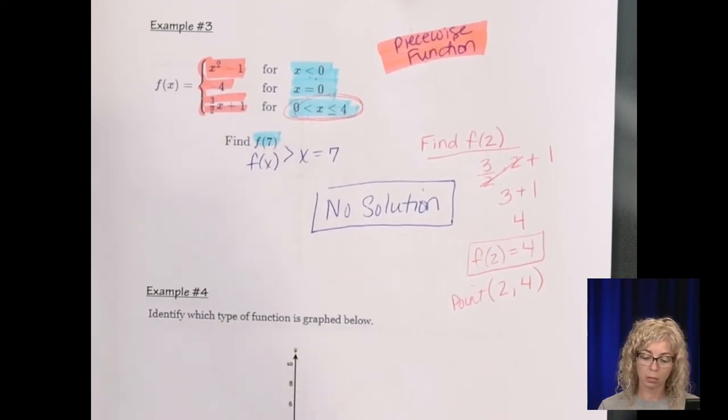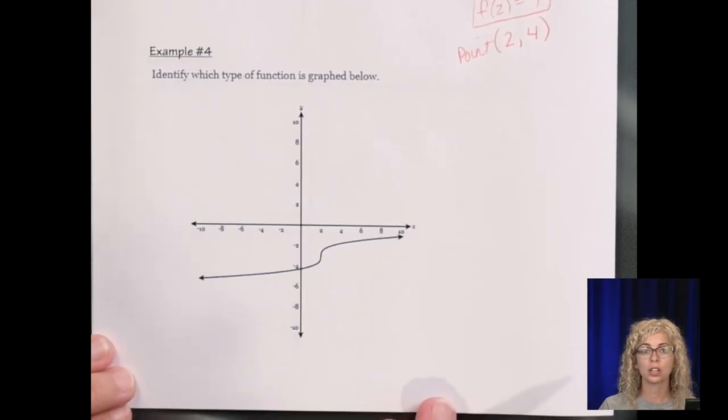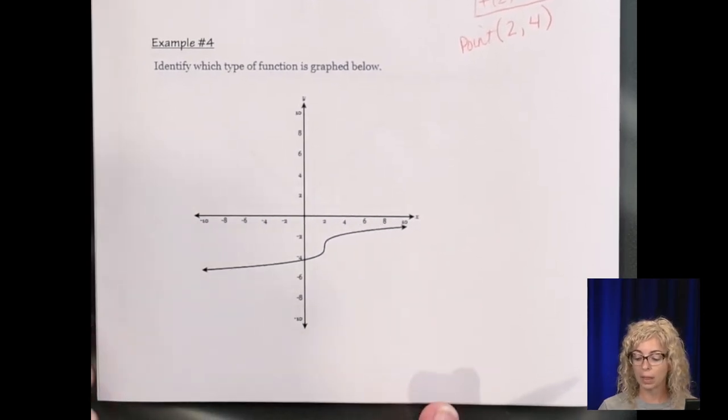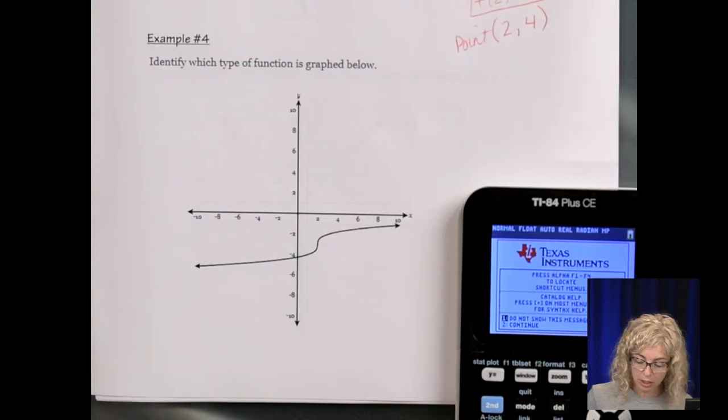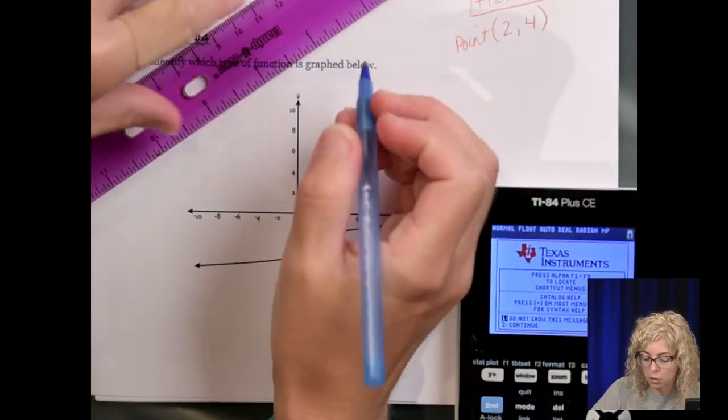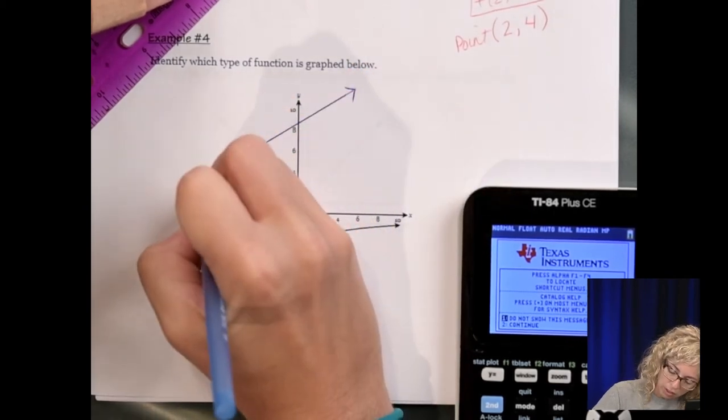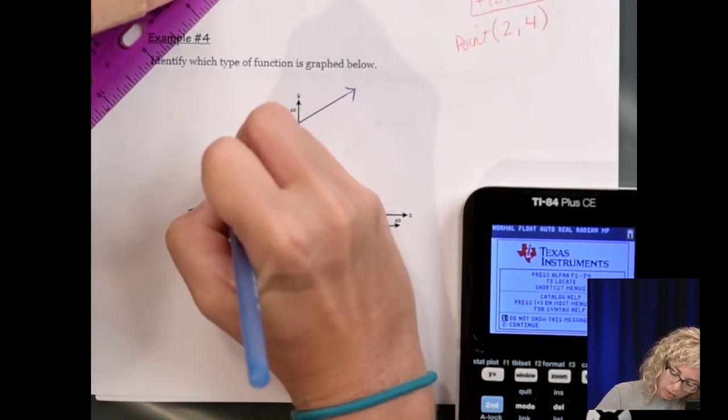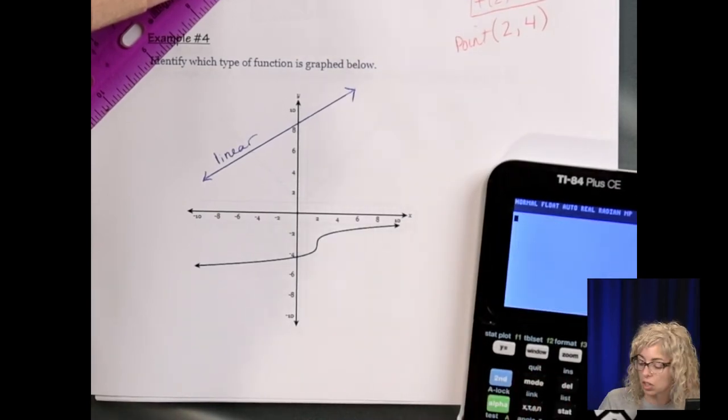Now moving on to example number 4. Identify which type of function is graphed below. And then it is multiple choice. So I would have your graphing calculator handy. And I'm going to give you some examples of other functions. So you take a look at the answer choices and say the first one is linear. So this type of function, let's just sketch them on here. It would be a linear function.